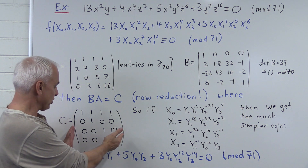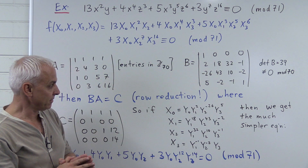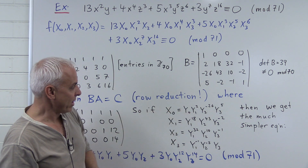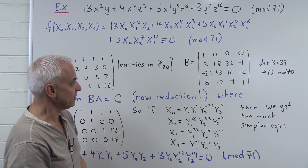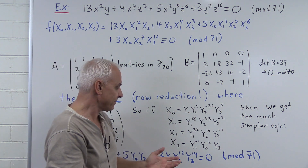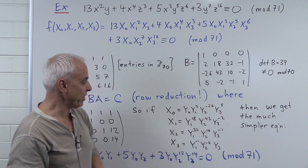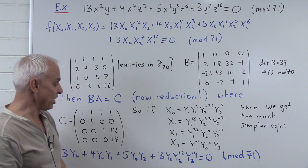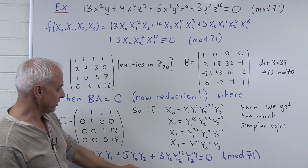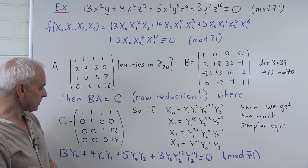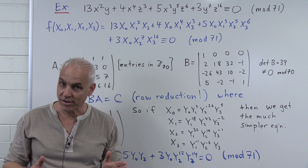The point is that if we construct a new equation that has this reduced matrix as its power matrix, then the two equations are basically equivalent through a change of variables of a particular kind. So we introduce four other variables y₀, y₁, y₂, y₃, and insist on these relations — obtained from the columns of this matrix. The effect of the algebra is that replacing x₀, x₁, x₂, and so on by these expressions and plugging into the original equation transforms it. The new equation we get is essentially: 13y₀ + 4y₀y₁ + 5y₀y₂ + 3y₀y₂¹²y₃¹⁴ = 0, corresponding to this power matrix. That's the basic idea — row reduction transforms our equation into a simpler one.